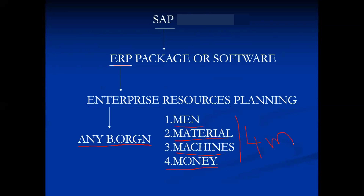These four M's are limited resources — not abundantly available for any business enterprise. The main objective of any business enterprise is earning maximum profits. For that purpose, every business enterprise has two alternatives. One is to increase profits by increasing sales, which requires increasing production, which requires increasing the utilization of these four resources.